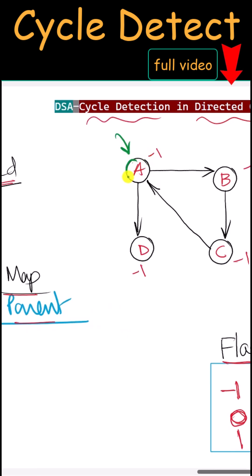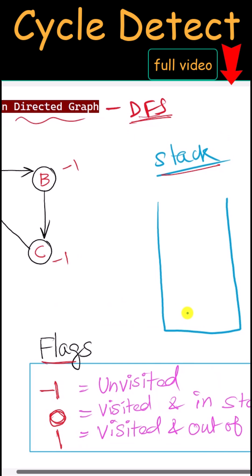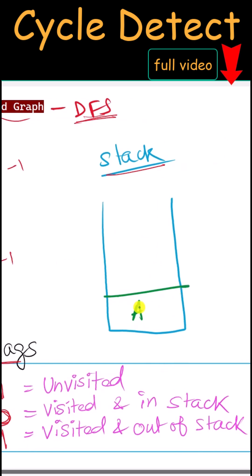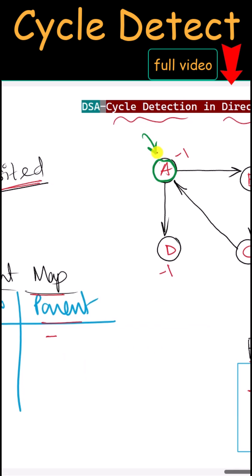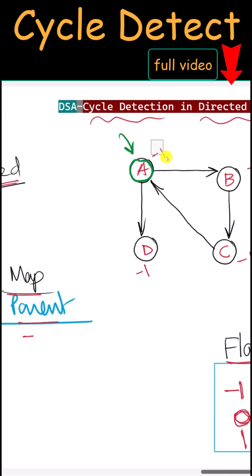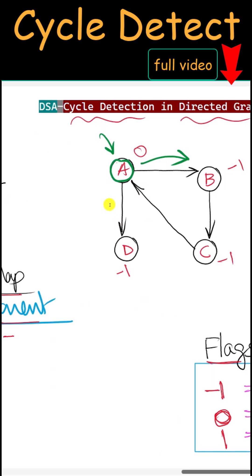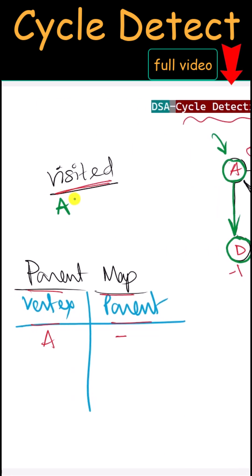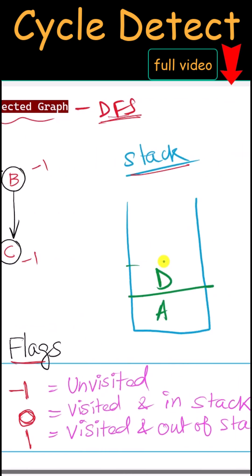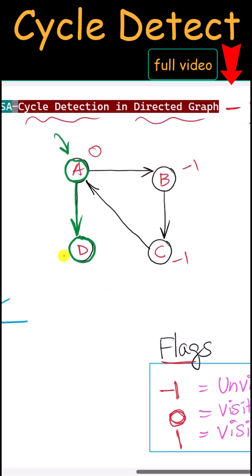We're going to start the traversal from node A. We'll mark it as visited and push it on the top of our stack. Vertex A has a parent of null because it is the starting point, and its flag will be modified to 0. Next we can either visit B or D — let's visit D. We mark D as visited, push it in our stack. The vertex D has parent A, so we modify its flag to 0.